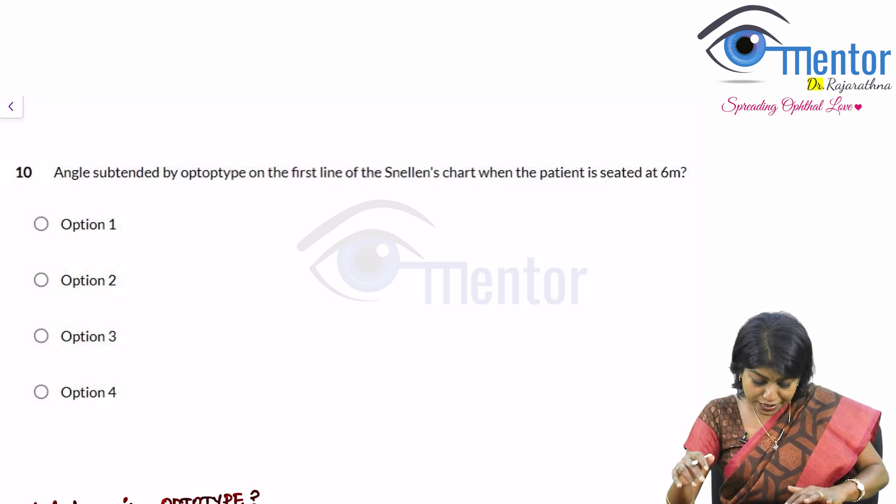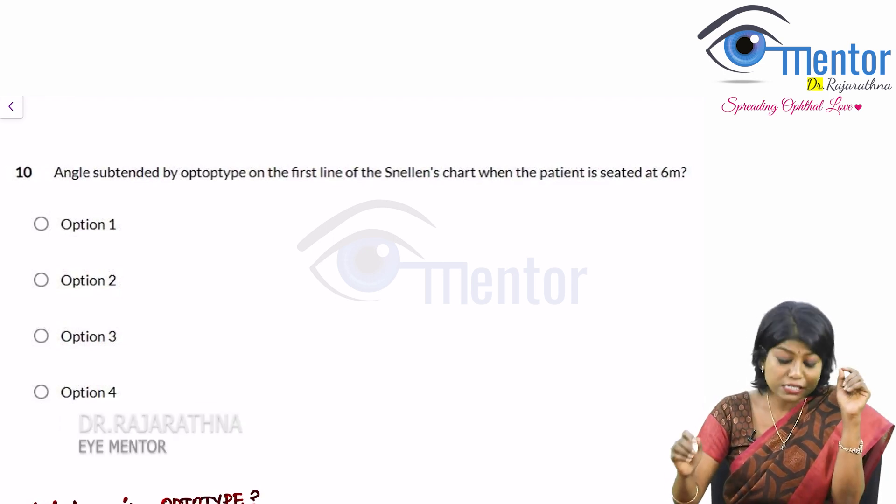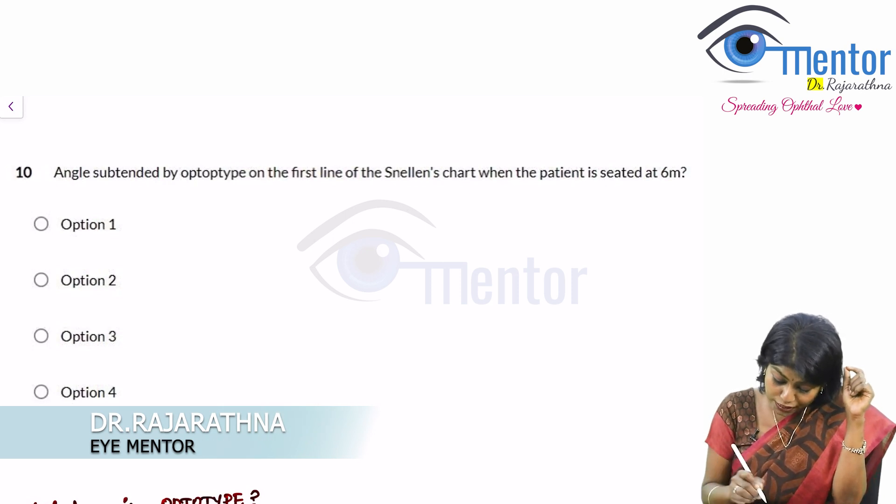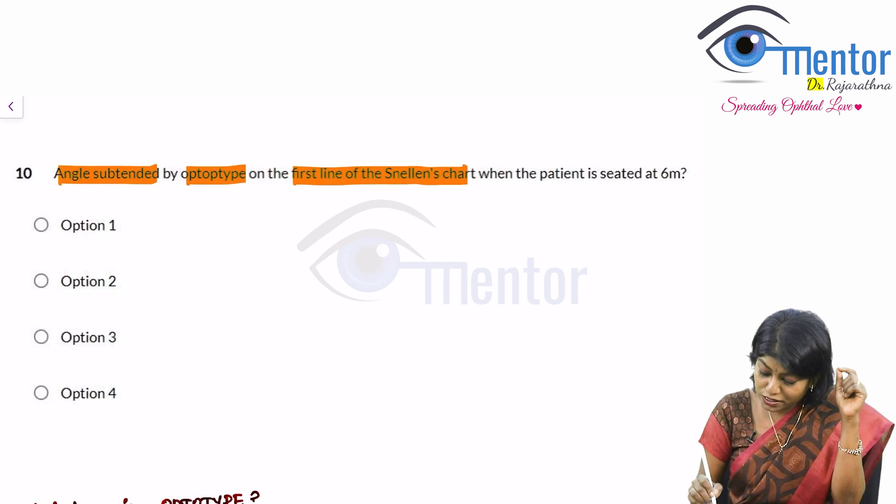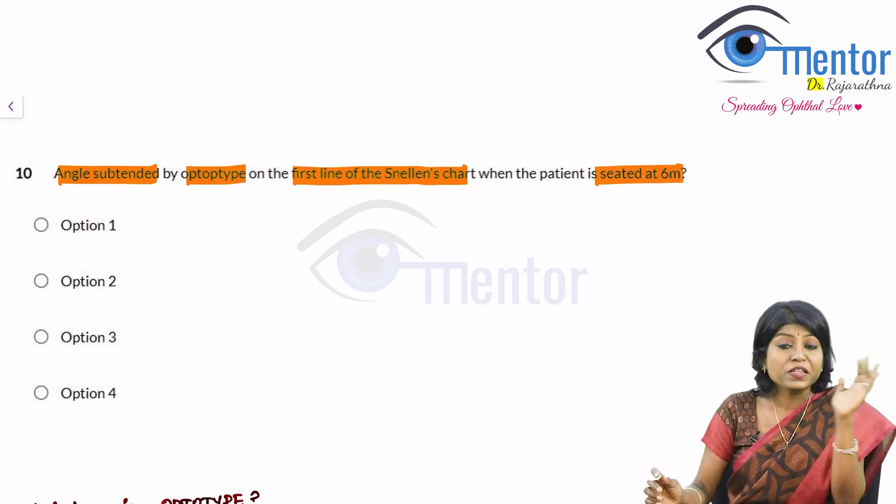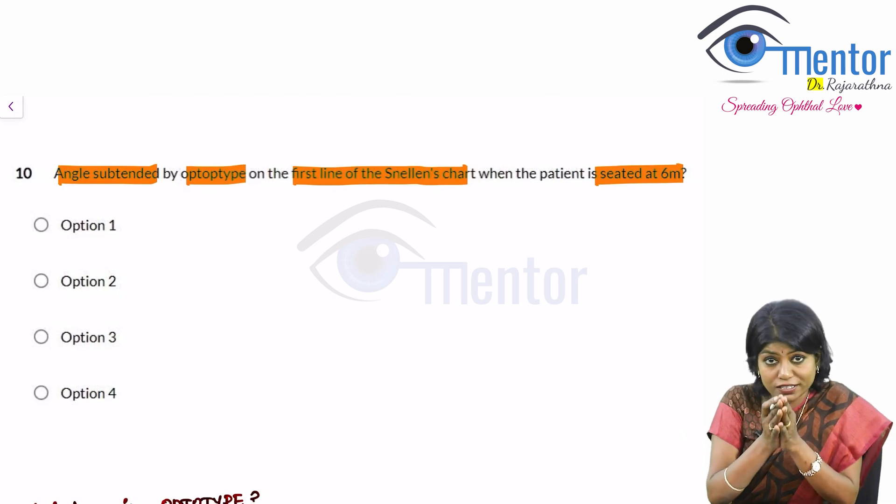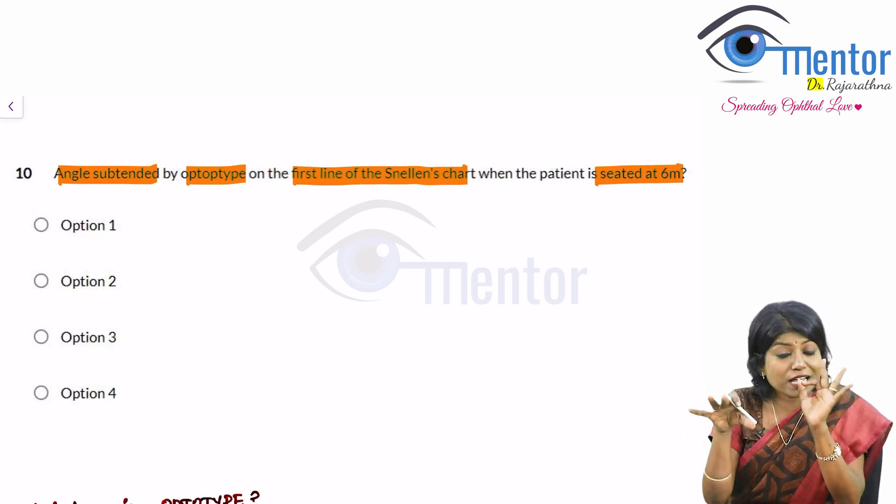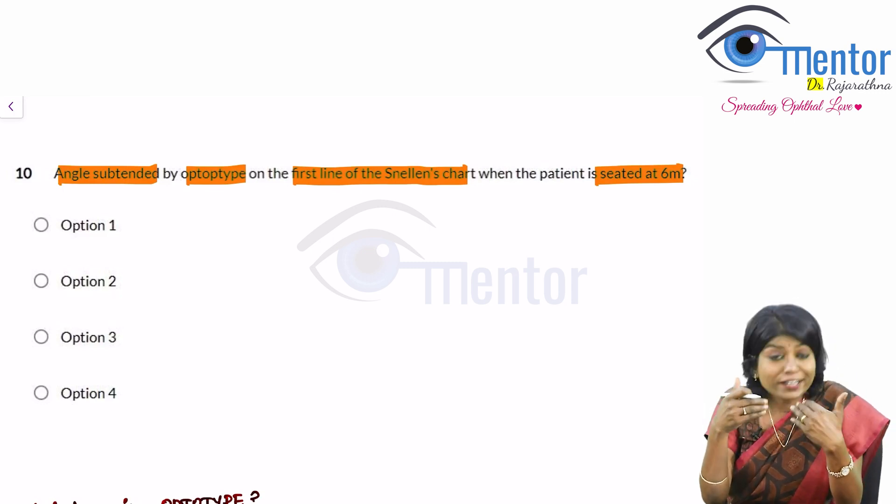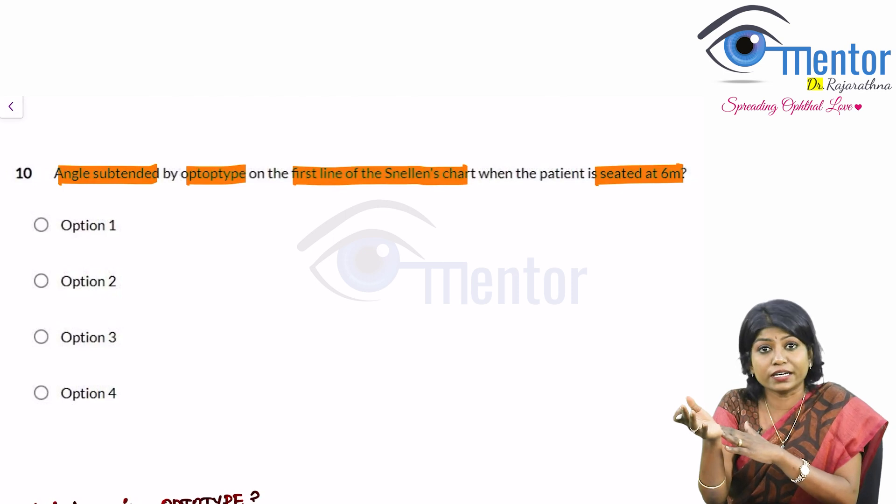Now question number 10. Angle subtended by optotype on the first line of Snellen's chart when the patient is seated at 6 meters. Now I have not given you any of the options here because I want you to know the concept. Arrive at the answer and look for the answer in the given options. So that is the best bet for you to get the right answer. Otherwise there is no point looking at the options without calculating.